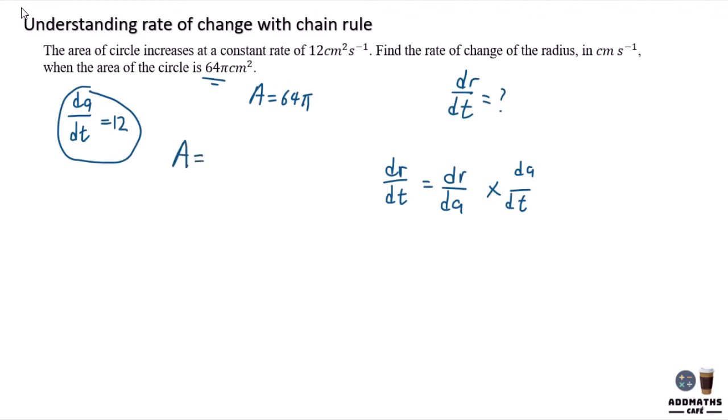You know that the area of the circle is πr². They say that the area is 64π, so πr² equals 64π. If you divide both sides by π, r² equals 64, and now you know your r which is 8.